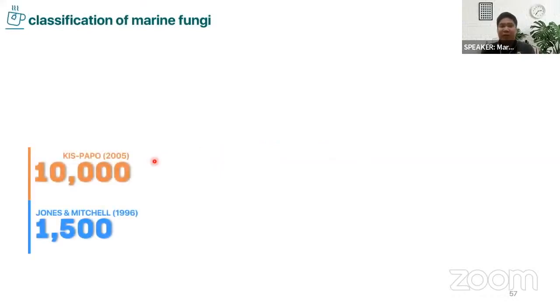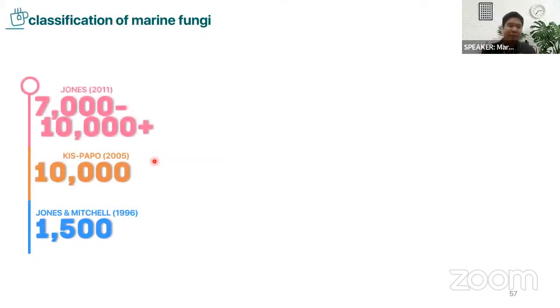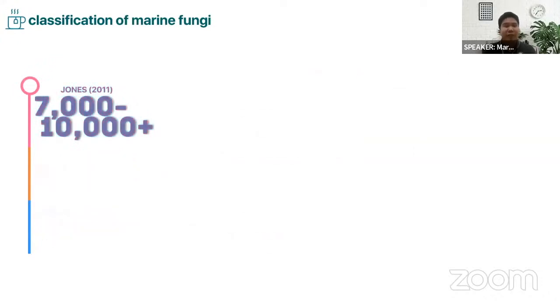For declassification, this is my topic. Marine fungi was estimated to be 1,500 in 1996, then estimated again at 10,000. This is an estimated number. And in 2011, Professor Jones estimated 7,000 to 10,000 marine fungi.